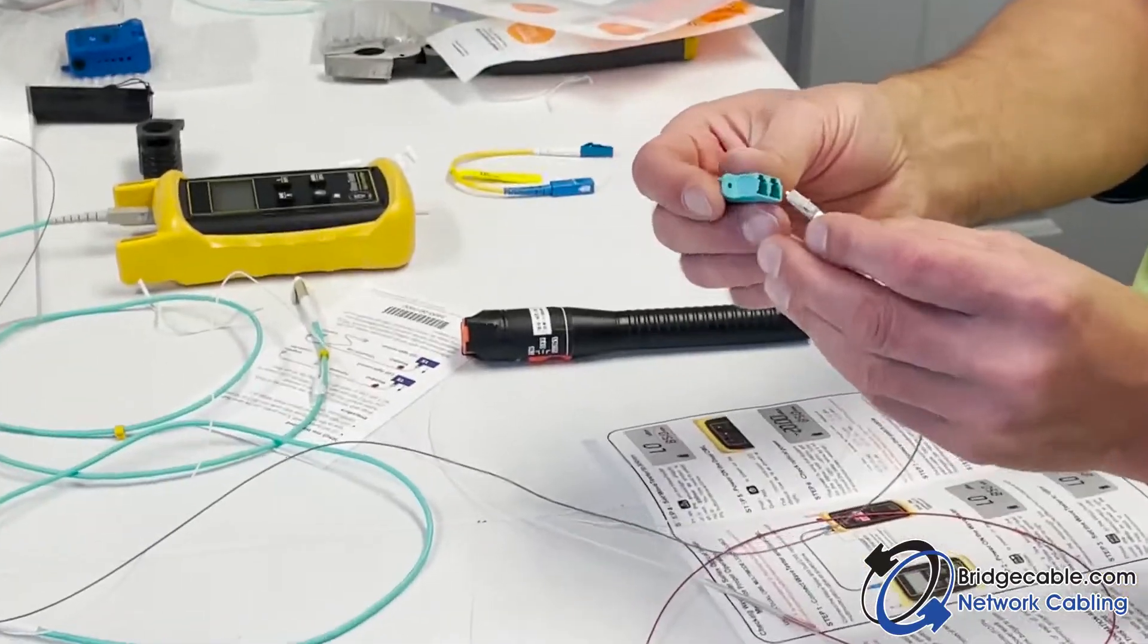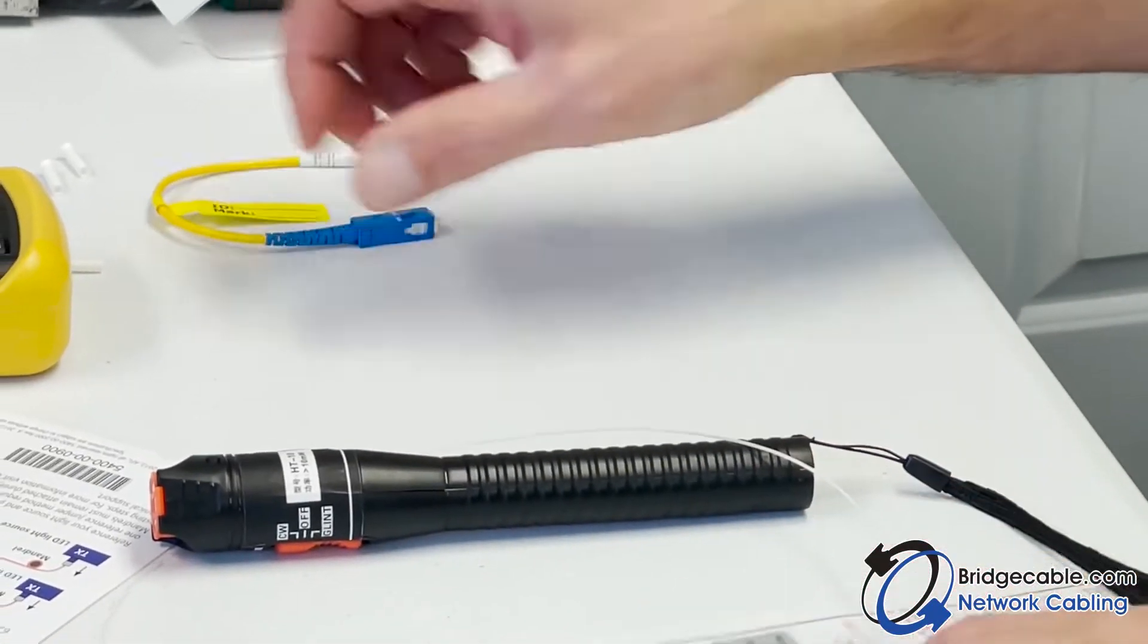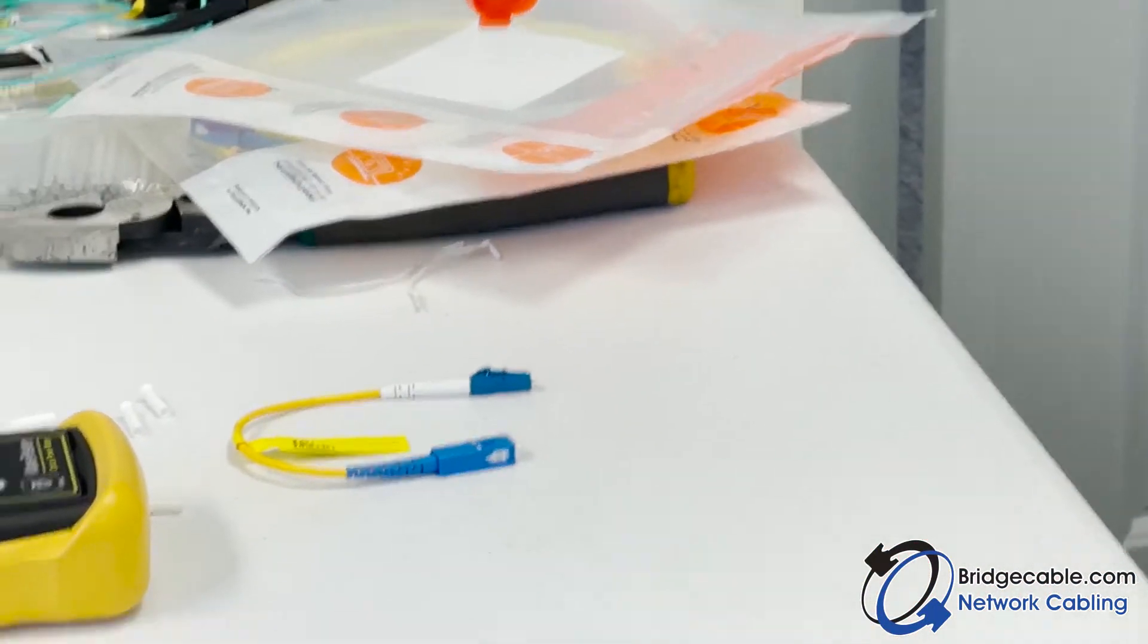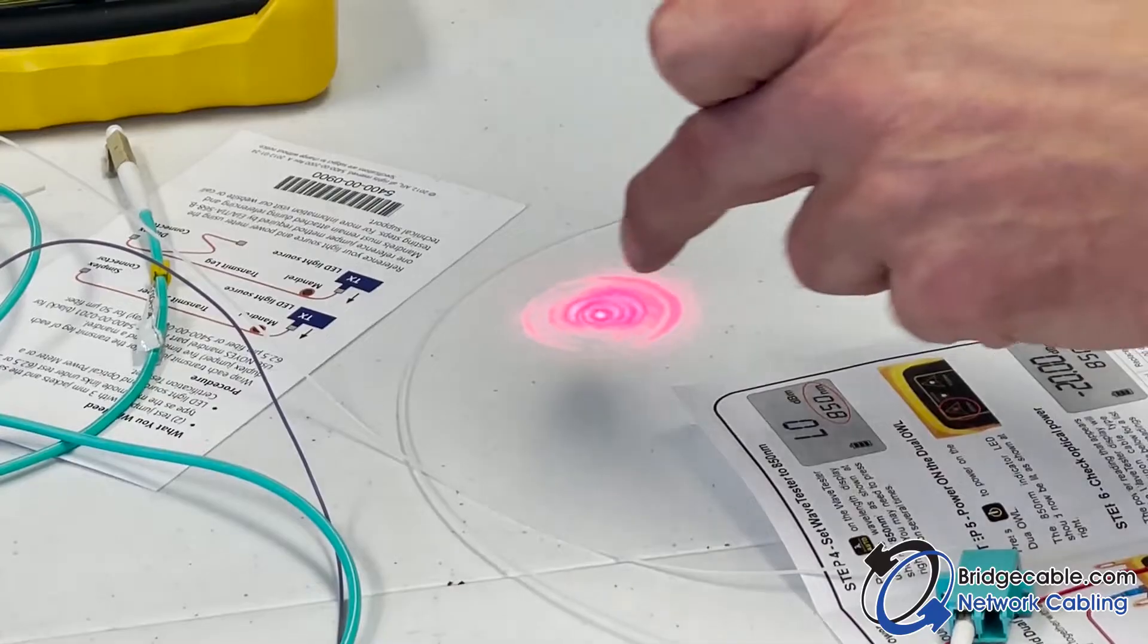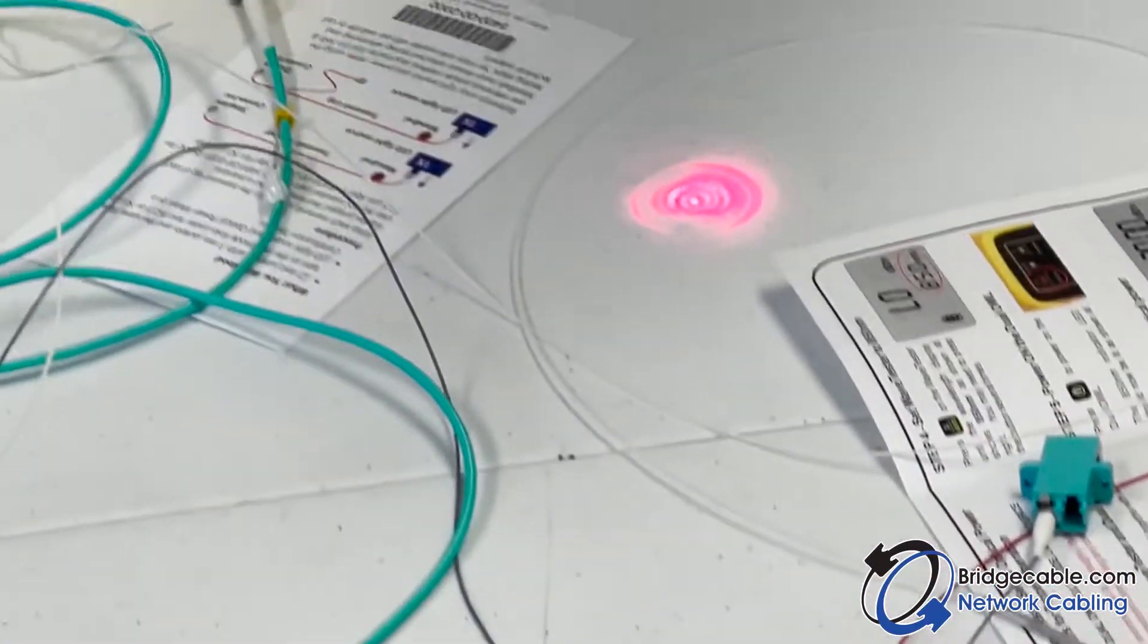We're going to do a simple light test first. What we have here is a 10 milliwatt laser test light. This particular light has a nice circular pattern, which means it's a good light.